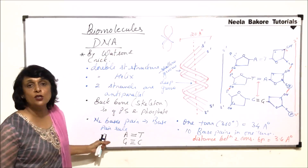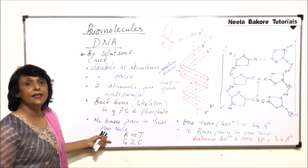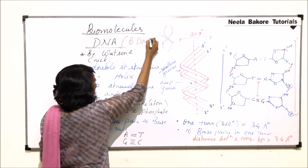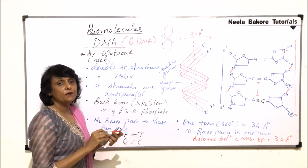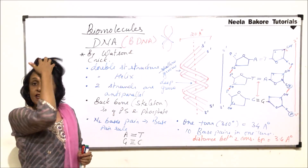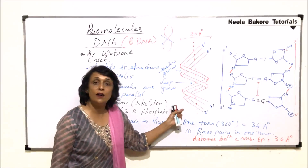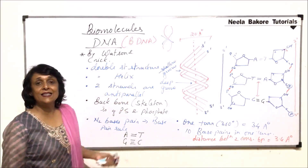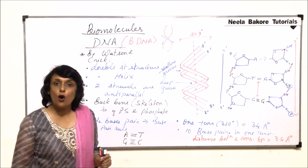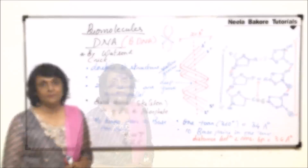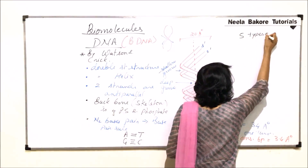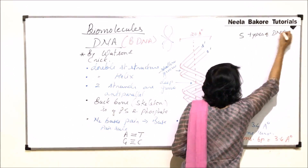This was the information given by Watson and Crick, and the DNA they explained was B-DNA. There are different types of DNA: A, B, C, D, and Z, and they differ in the number of base pairs per turn.